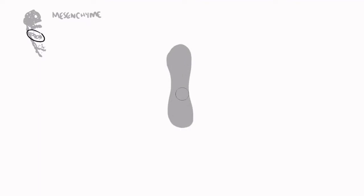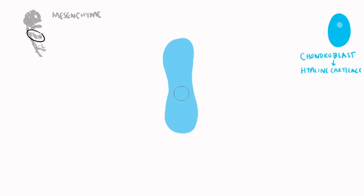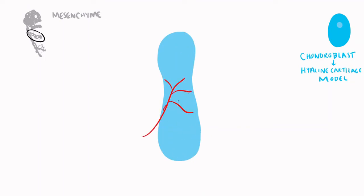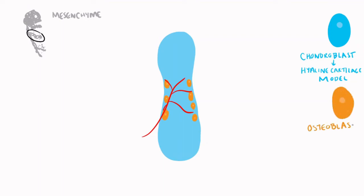Let's now take a look at endochondral ossification. We'll begin with the same mesenchymal skeleton and isolate one of the long bones to see the process. Chondroblasts will replace the mesenchymal model with hyaline cartilage, creating a hyaline cartilage model that will then grow in length and in width. Blood vessels then bring osteoprogenitor cells and factors that transition them into osteoblasts, which start laying the bone matrix and initiating the process of calcification.